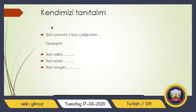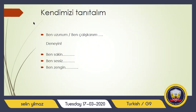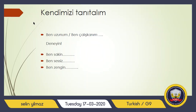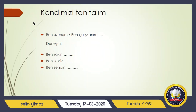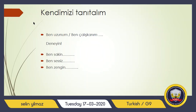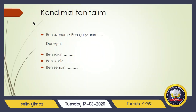Süper! Kendimizi tanıtalım — let's introduce ourselves. We are going to use these opposite words to define and introduce yourself. For example, 'I am tall' means 'Ben uzunum.' Ben uzunum. Ben çalışkanım. Ben sakin. Ben sessiz. Ben zengin. Remember nominal sentences — you got half of Turkish with nominal sentences, and you are going to use exactly that here.